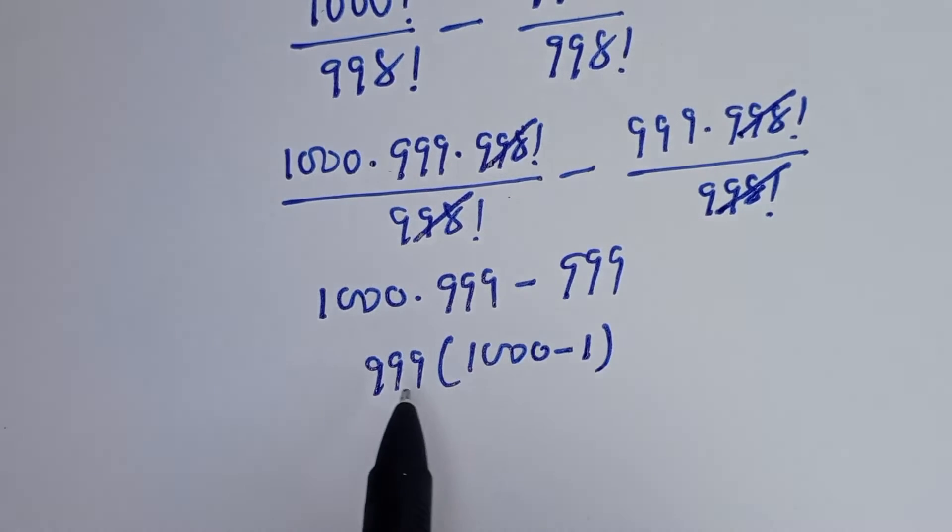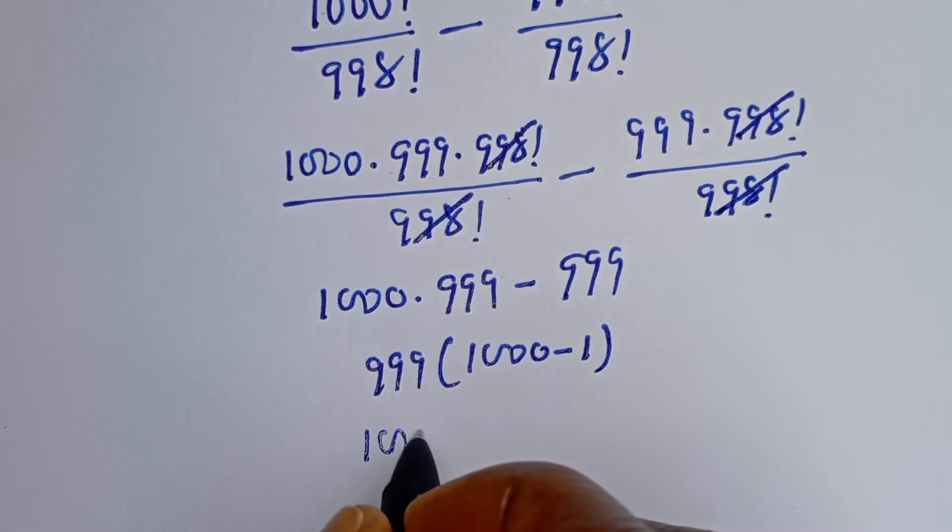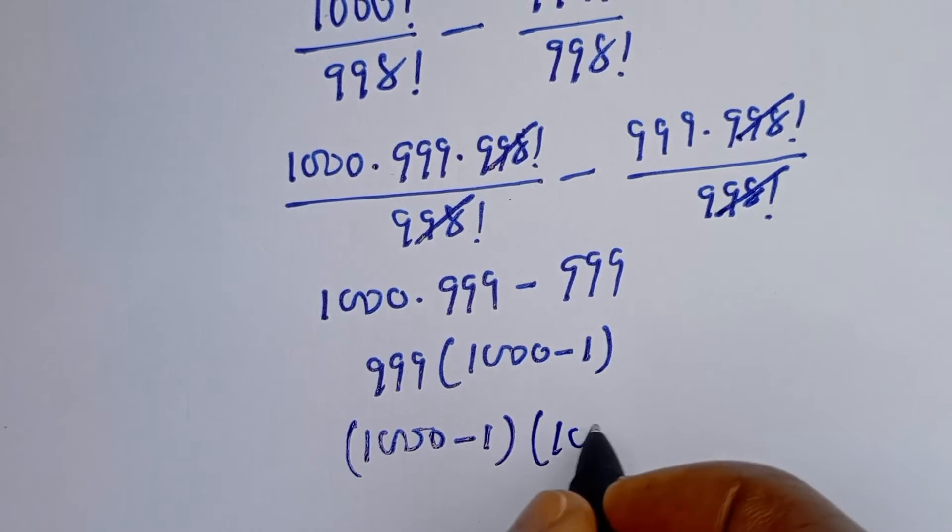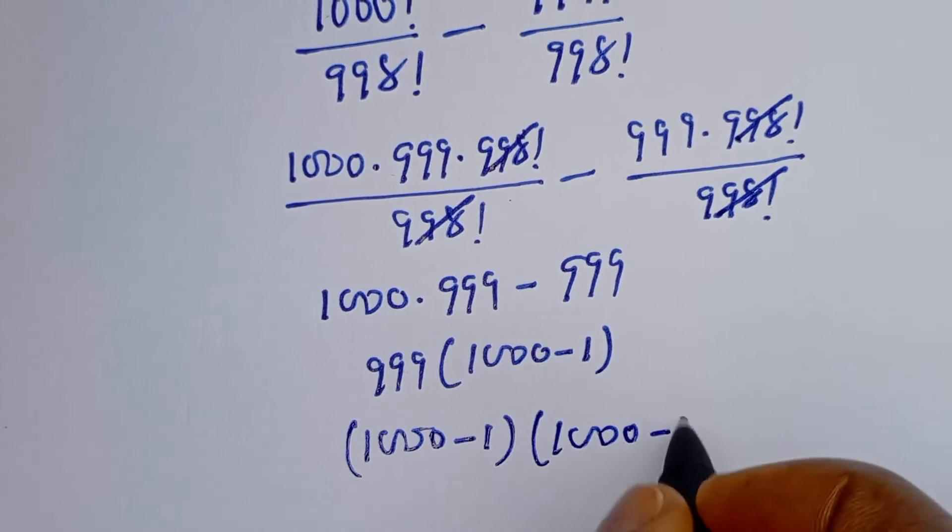Then 999 is the same thing as 1000 minus 1 bracket, this 1000 minus 1.